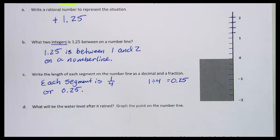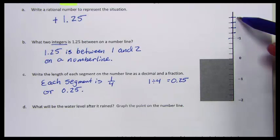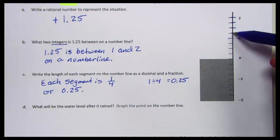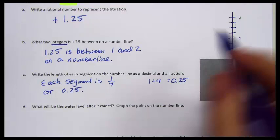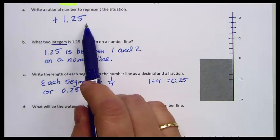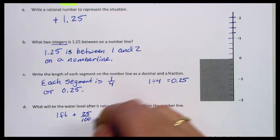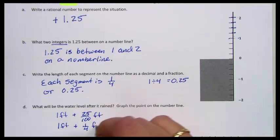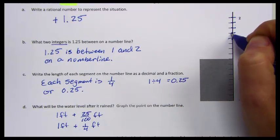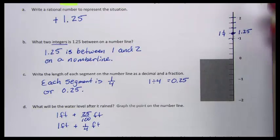What will be the water level after it rained? We want to graph the point on the number line. Here's one and here's two. Each mark represents one-fourth or twenty-five hundredths of a foot between one and two feet. So one and twenty-five hundredths is one foot plus twenty-five hundredths — one foot plus one-quarter. There is one and twenty-five hundredths, or one and one-fourth feet. That's where the water level would be after it rained.